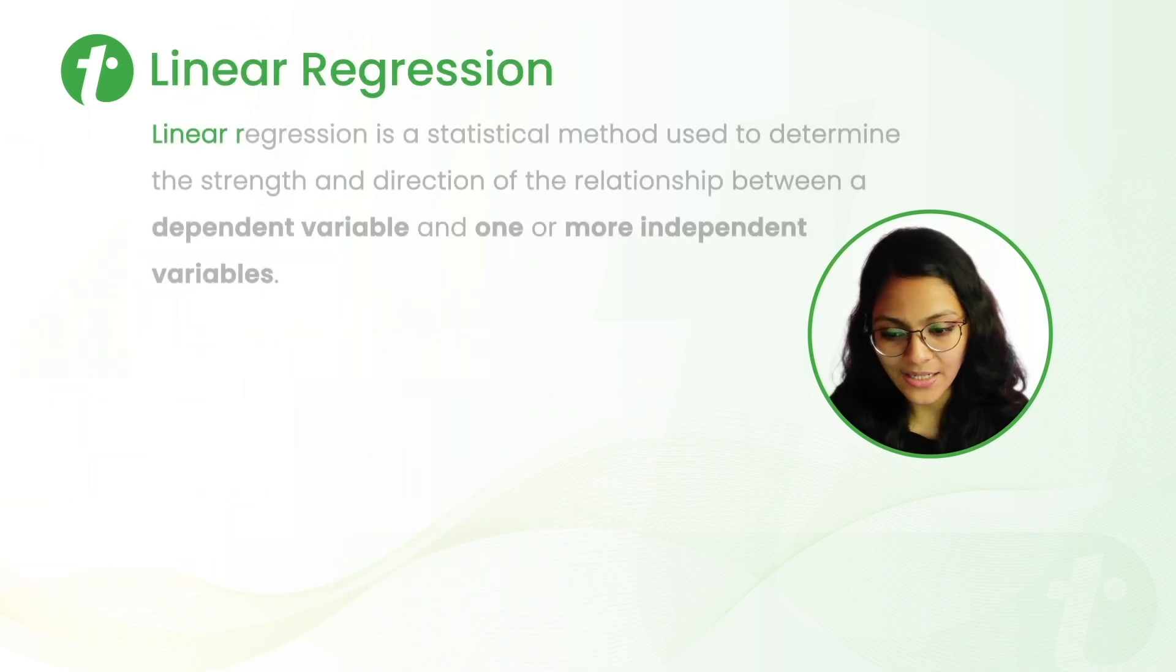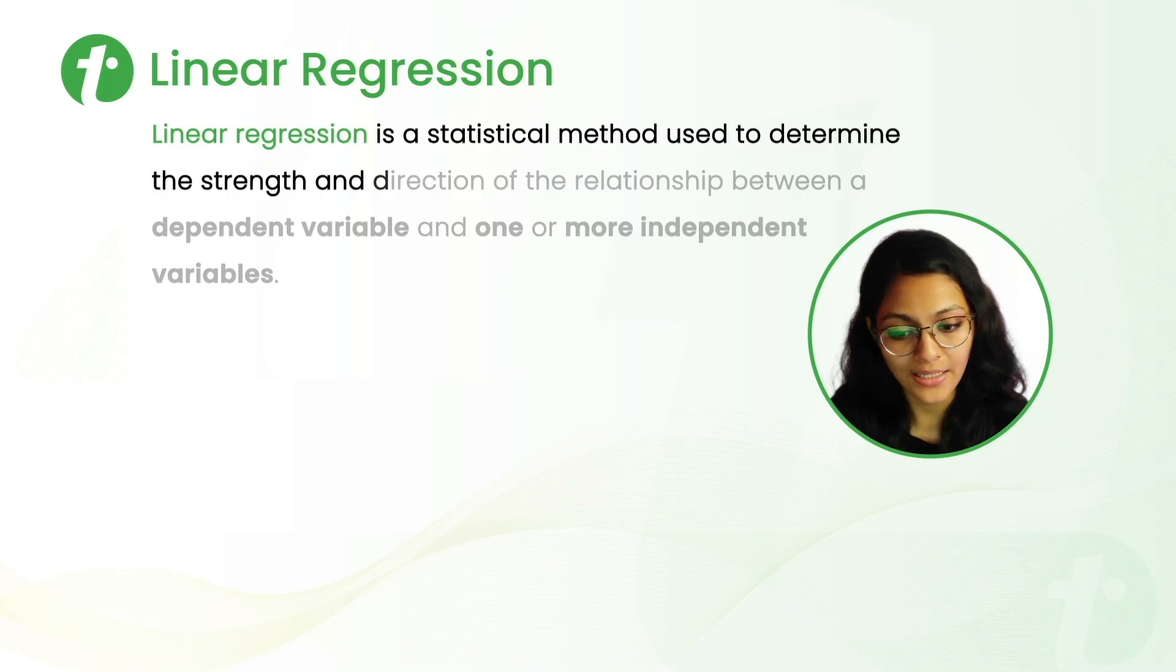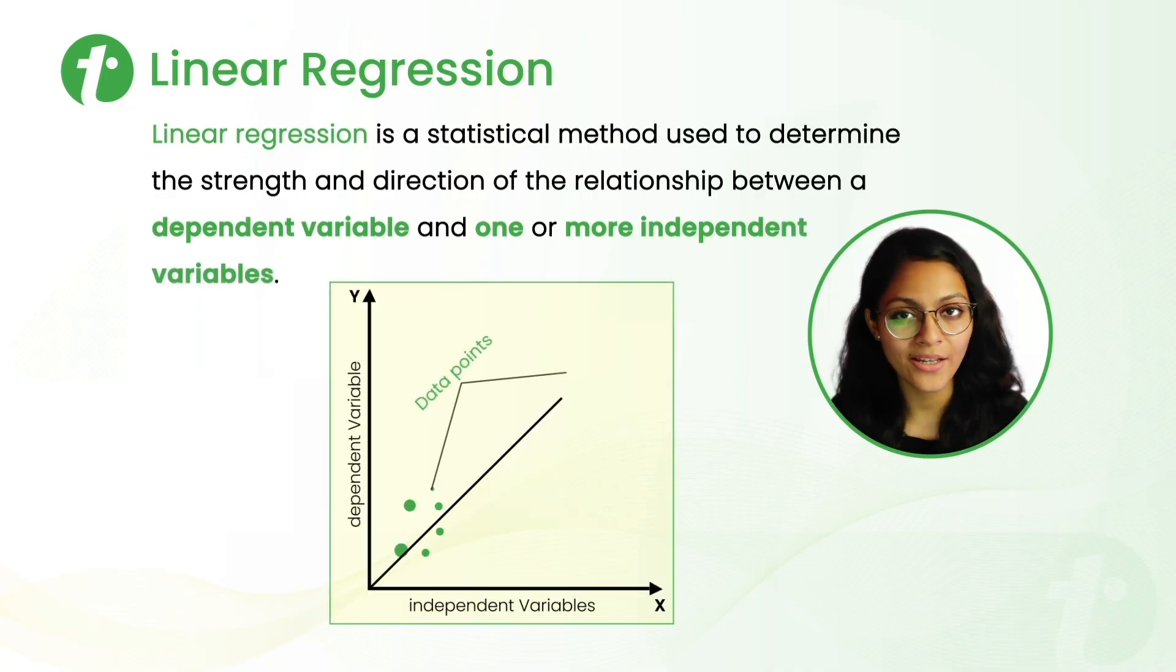So what is linear regression? From definition, linear regression is a statistical method used to determine the strength and direction of relationship between a dependent variable and one or more independent variables. It is called linear regression because it assumes that the relationship between the variables is linear.